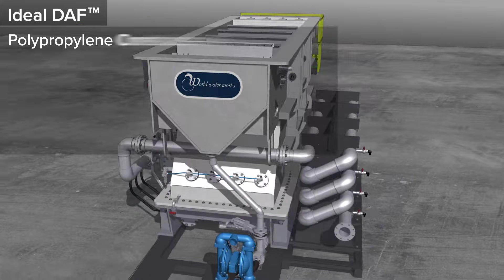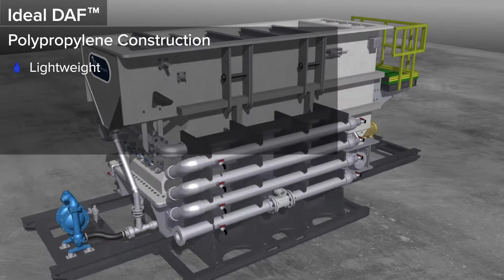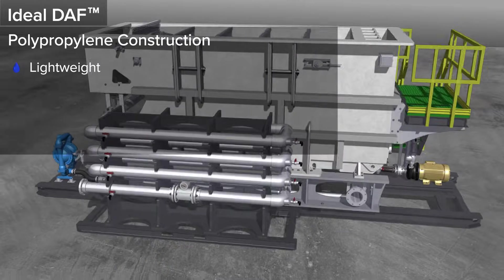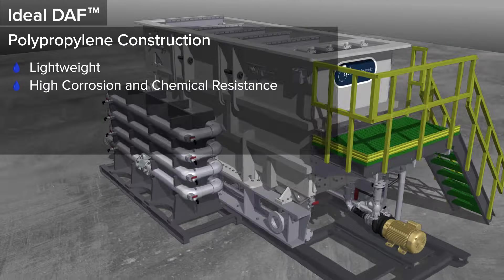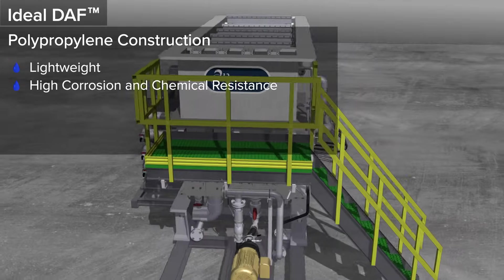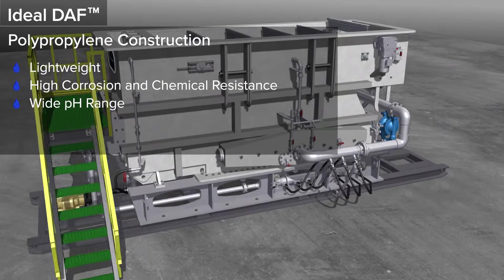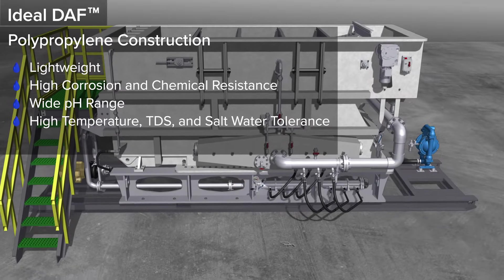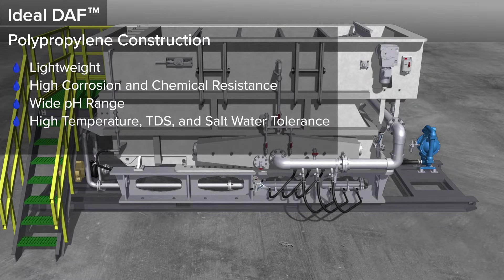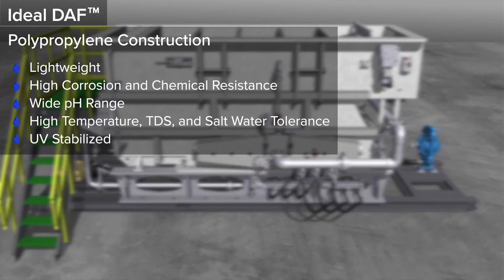The DAF's polypropylene construction allows it to be lightweight while still maintaining a high level of corrosion and chemical resistance. This combination gives the DAF the ability to handle a wide pH range with high temperature, TDS, and salt water tolerance, all while being UV stabilized.